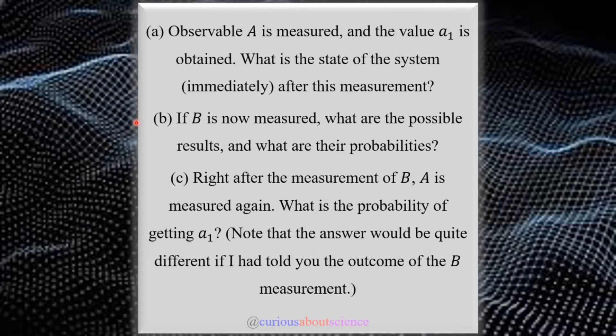B, if observable B is now measured, what are the possible results, and what are their probabilities? Okay, so we have to be careful about the queuing here between A and B. And then for C, right after the measurement of B, A is measured again. What is the probability of getting A1?